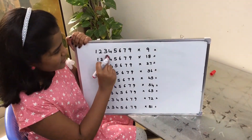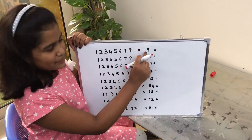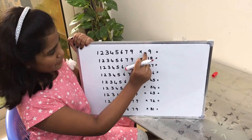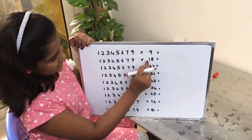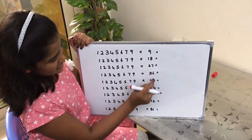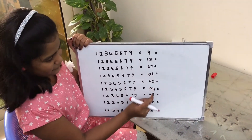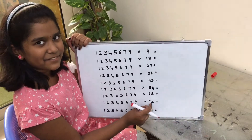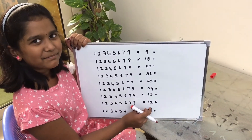And these numbers are going to multiply with the 9 table: 9, 8, 8, 8, 7, 3, 6, 4, 5, 5, 4, 6, 3, 7, 2, 8, 1. Now, we are going to see a magic.